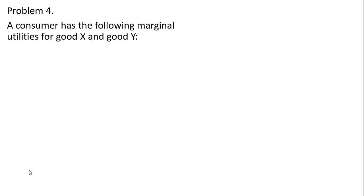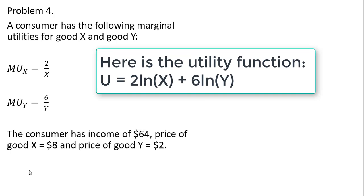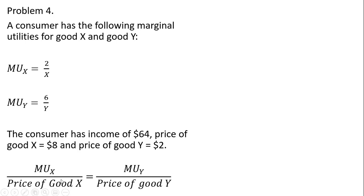Problem four. The consumer's marginal utility of x is 2 divided by x, and the marginal utility of y is 6 divided by y. Note that the utility function itself is not given here — only the marginal utilities. We have the consumer's income and the price of each good. Since we're not dealing with a marginal rate of substitution, we rely on the utility maximizing condition: marginal utility per dollar equalized across goods.